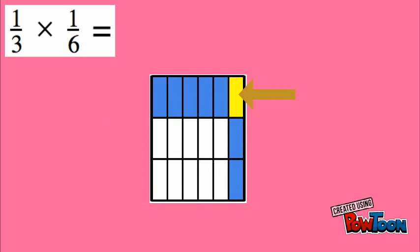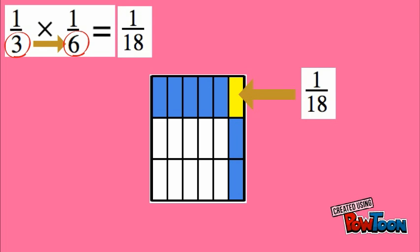So this little guy right here, we notice it's one out of eighteen total little unit squares. So we say that unit tile is one eighteenth. Now we could have also done three times six, which gives us one eighteenth.